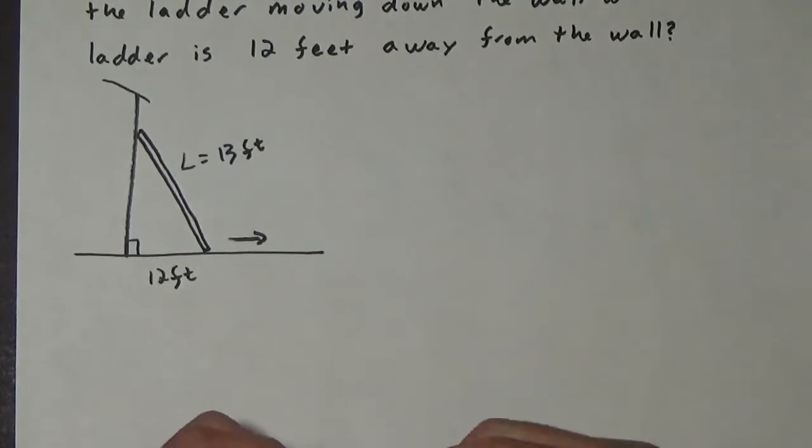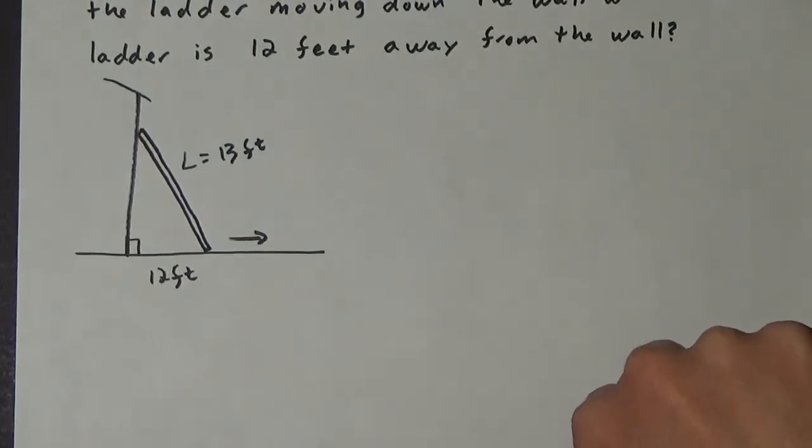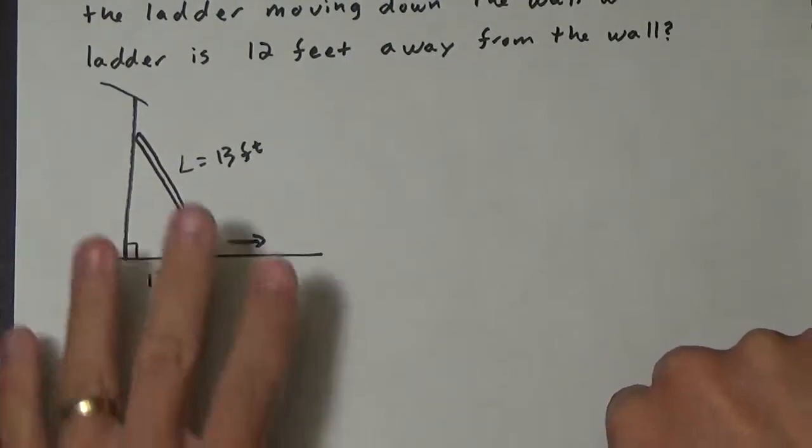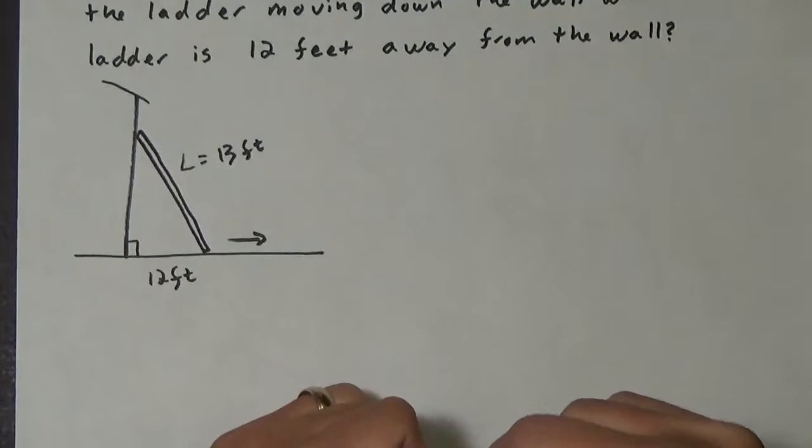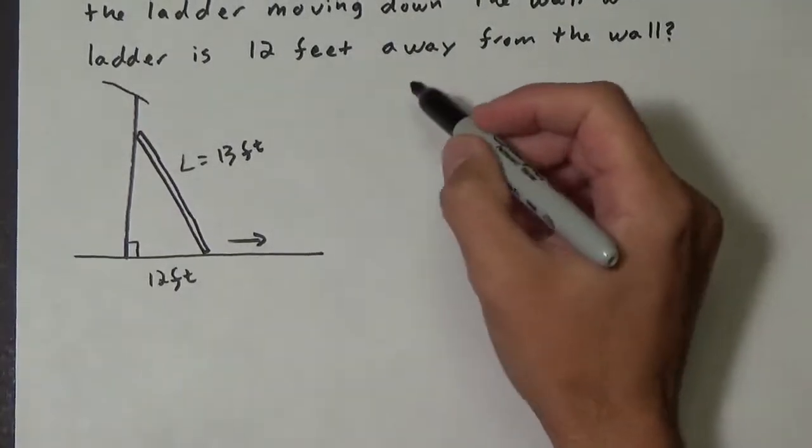Now when you have a right triangle you have lots of options. You have the Pythagorean Theorem, you have some trig functions, so those are all good. You do have to choose the right one. In this case, because we have a side, a side, we'll be able to get this side, and it seems like everything is based on sides, it appears that the Pythagorean Theorem would probably be the best choice.